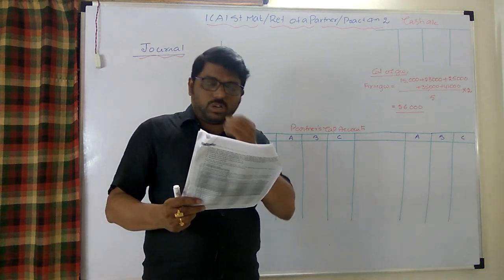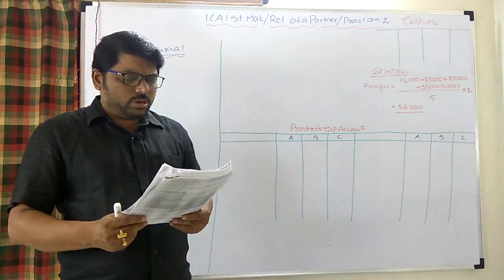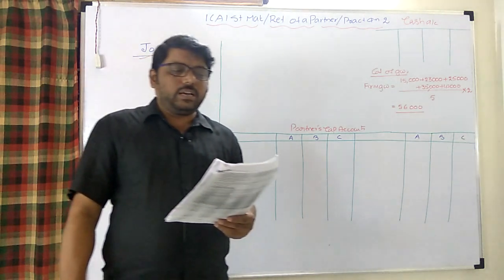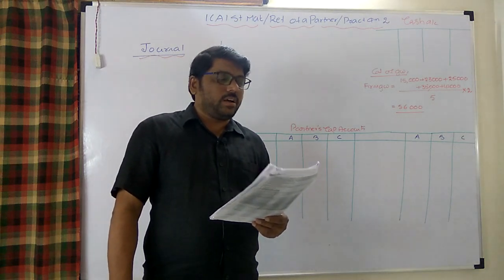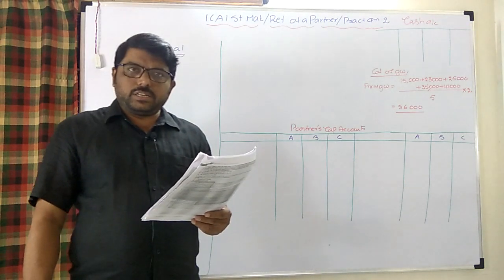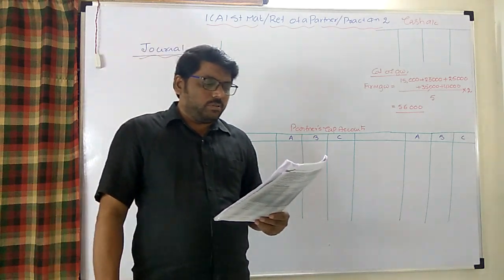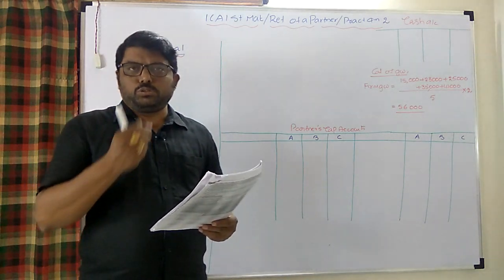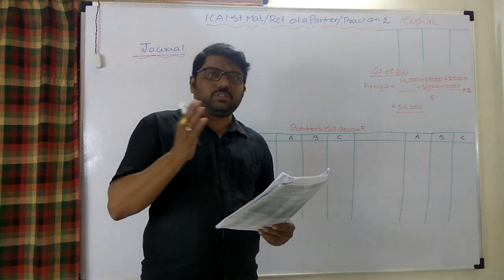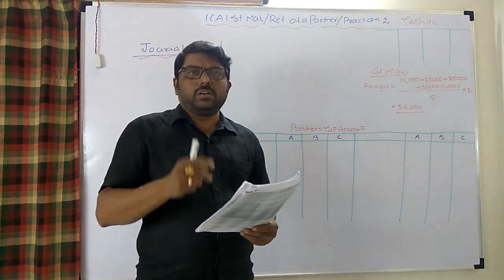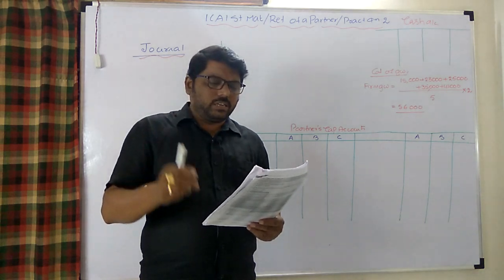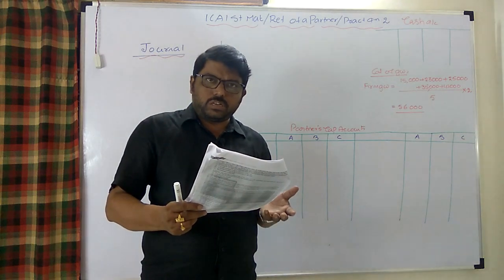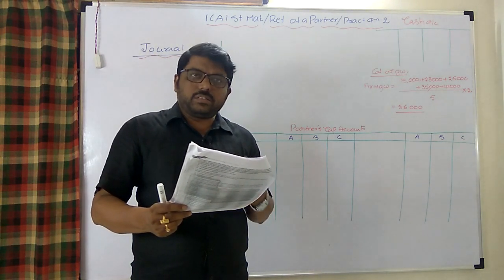The total capital of the firm will be maintained at 3 lakhs in the new ratio 3:1. Earlier the capital was 1,50,000; 1,00,000; and 50,000. After A's retirement, B and C will maintain 3 lakhs in ratio 3:1, meaning 2,25,000 for B and 75,000 for C.